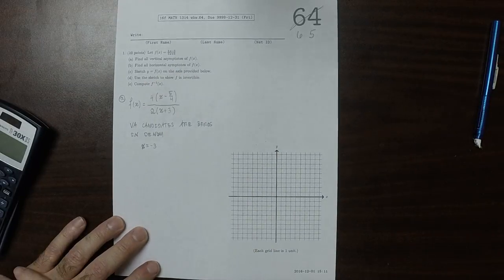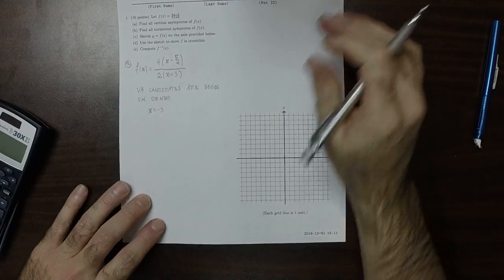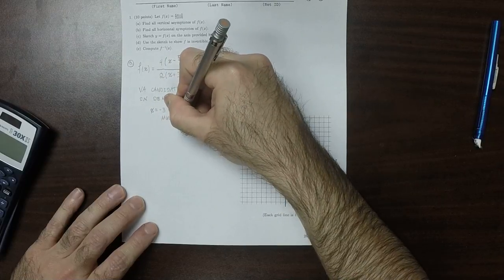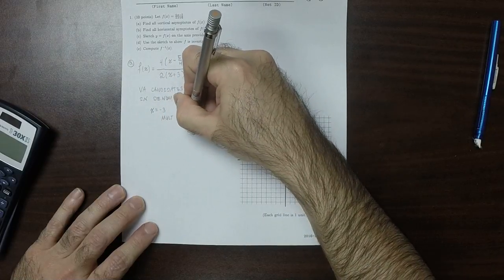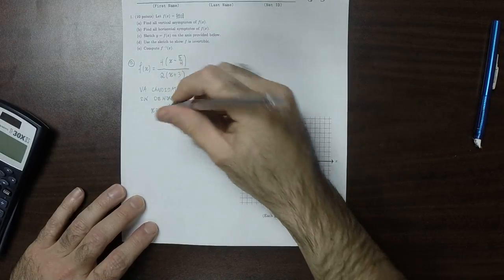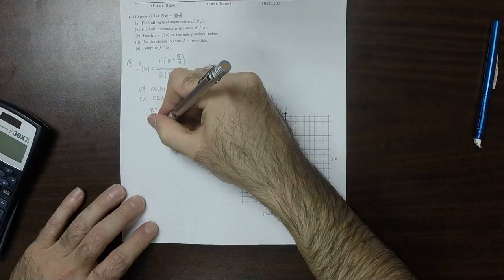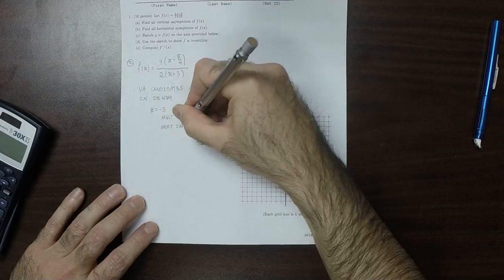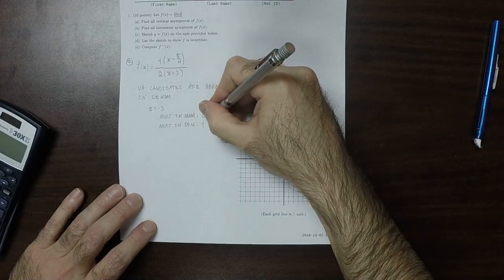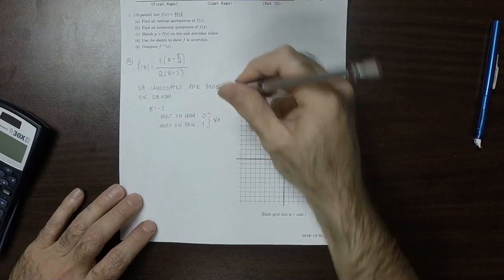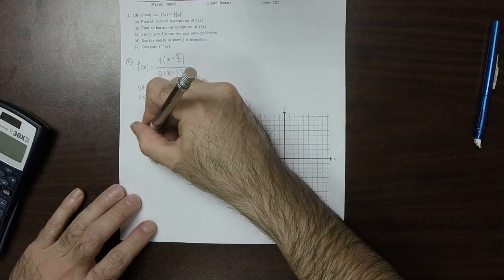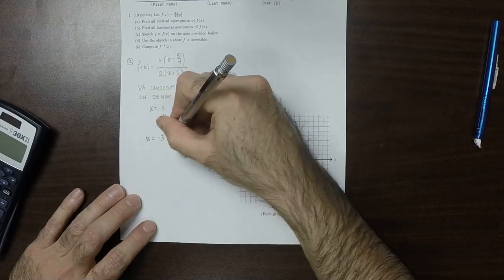So now the question is, is it in fact a vertical asymptote or is it not? What we need to check is the multiplicity in the numerator. The multiplicity of negative 3 in the numerator is 0, because X plus 3 is not one of the factors up there. And the multiplicity in the denominator is 1. Taking these two together, the fact that 1 is more than 0 means that yes, this is in fact a VA. So X is negative 3 is a VA.